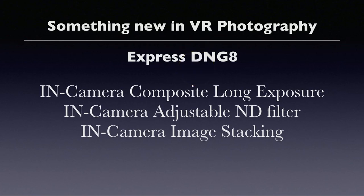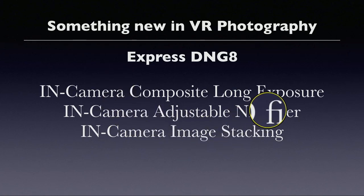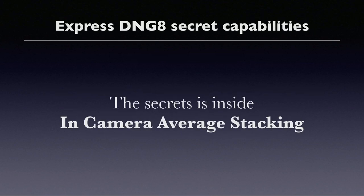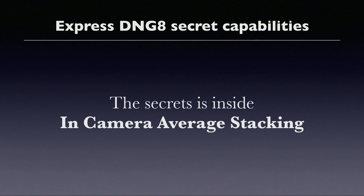After shooting in Express DNG8, you will get a JPEG plus a DNG, and both are very high quality reduced-noise images because of the average image stacking technology built inside the camera. It's like having an in-camera composite long exposure shot by making full advantage of the averaging stacking, and also like having an in-camera adjustable ND filter. The Express DNG8 is in-camera averaging photo stacking, giving you a high quality JPEG and DNG straight out from the camera.